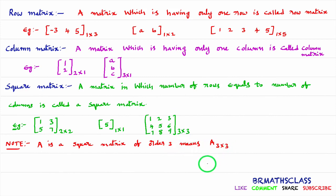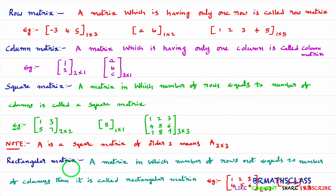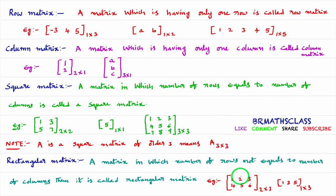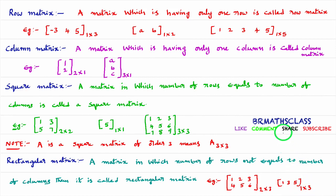Now we will understand what is a rectangular matrix. A matrix in which the number of rows is not equal to the number of columns is called a rectangular matrix. Observe this example — it is a matrix of order 2 by 3: two rows and three columns. The number of rows is not equal to the number of columns, so this is an example of a rectangular matrix. Observe this matrix of order 1 by 3: one row and three columns. Since the number of rows is not equal to the number of columns, this is also an example of a rectangular matrix.